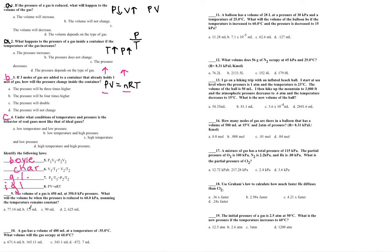Now we're going to get into some math. The only time you need to convert to liters and kPa is when using the ideal gas law, PV = nRT, because R is in terms of kPa, liters, moles, and Kelvin. For Boyle's Law, Charles' Law, Gay-Lussac's Law, and the combined gas law, the only unit you must convert to is Kelvin. Otherwise, you can use milliliters, atmospheres, or millimeters of mercury.